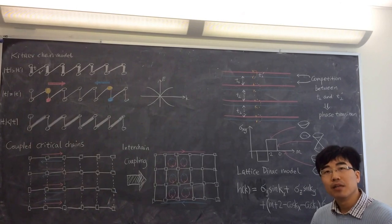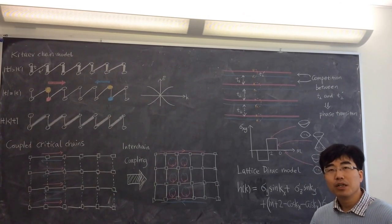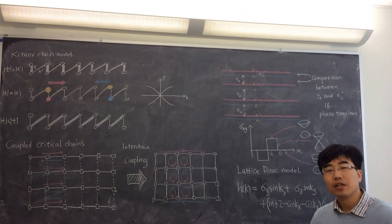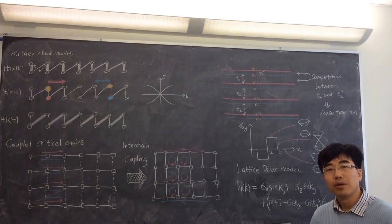So this is how we understand massless states as critical points between massive states. And once you get these massless states, there are non-trivial ways to couple them and get higher dimensional topological states.